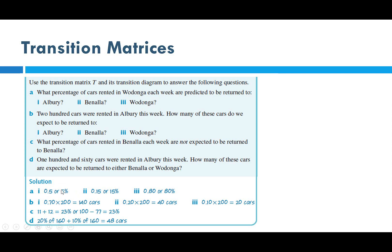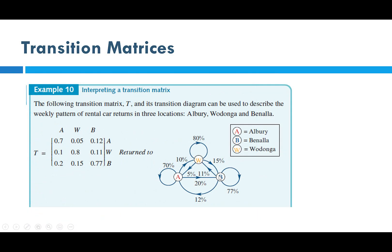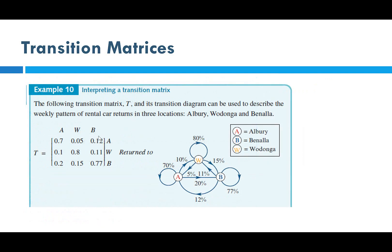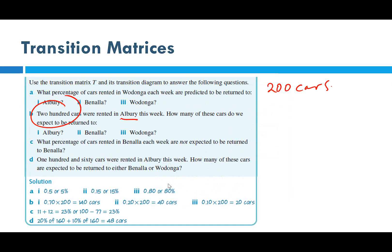Next: cars rented in Wodonga going to Benalla — follow the B arrow — that's 15%. Now for numerical questions: 200 cars were rented in Albury this week. How many go back to Albury? Rented in Albury, returned to Albury is 70% from the diagram. So 0.70 × 200 = 140 cars.